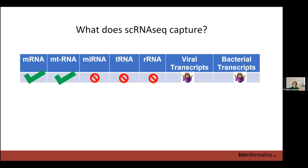For single nucleus RNA-seq, in theory you should get no mitochondrial RNA reads. In practice it depends on the protocol used to extract nuclei — some truly give zero mitochondrial reads, while others still capture some because the extraction captures material stuck to the outside of the nucleus as well.